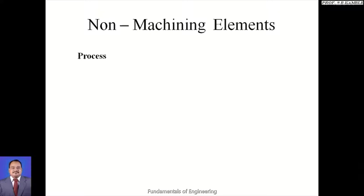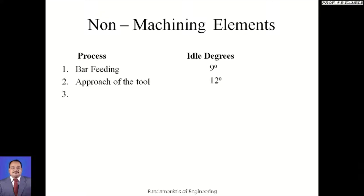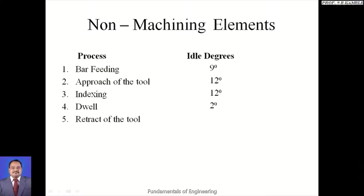Non-machining elements are assigned ideal degrees. Bar feeding is a standard constant of 9 degrees. Approach of the tool is 12 degrees. Indexing is 12 degrees — for every turret operation we give indexing so the turret moves backward and changes tools. Dwell is 2 degrees, given when slide operations are performed so the slide tool can be changed. Retract of the tool is 12 degrees, used to return all tools to the initial position.